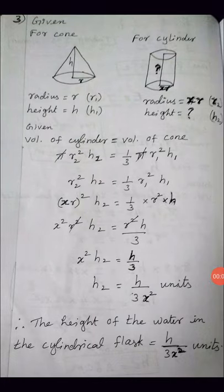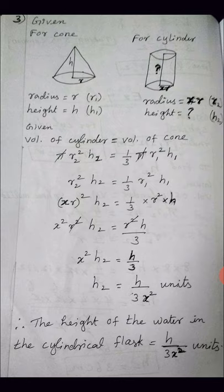Now we are going to see Exercise 7.4 on mensuration. The third sum: a conical flask is full of water. The flask has base radius r units and height h units. The water is poured into a cylindrical flask of base radius xr units. Find the height of the water in the cylindrical flask.